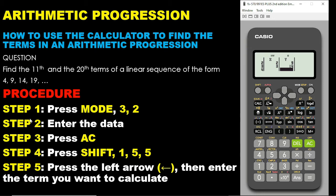The next thing is that we press AC. We press AC because we want to clear the display so we can use the next function. Please note — you only press AC. If you press any other key, you are going to lose the data. But because we are interested in the data we have, you only press AC. Relax — your data is still on the calculator. So these are the steps: Mode, option 3, option 2, then you enter the data, then you press AC.